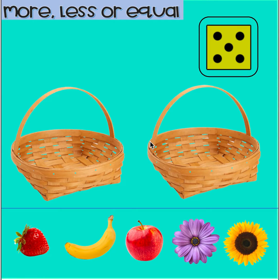Hello friends! Today we're going to continue learning about comparing two sets or groups of objects using words such as more than, less than, or equal to. We're going to use a dice to find out how many fruits or flowers we need to put in each basket. Can you help me with the numbers? This is also a way to practice our subitizing. Now let's start!